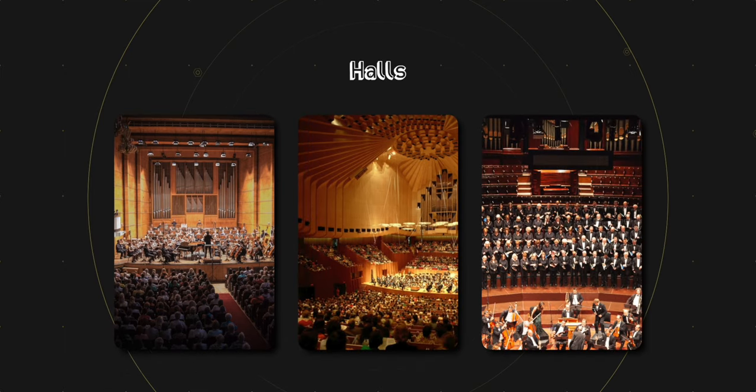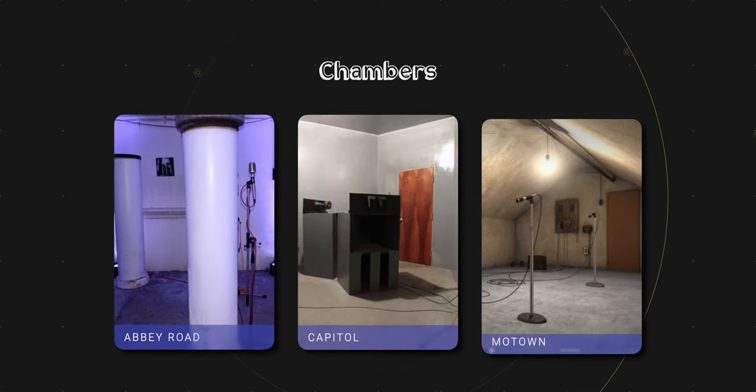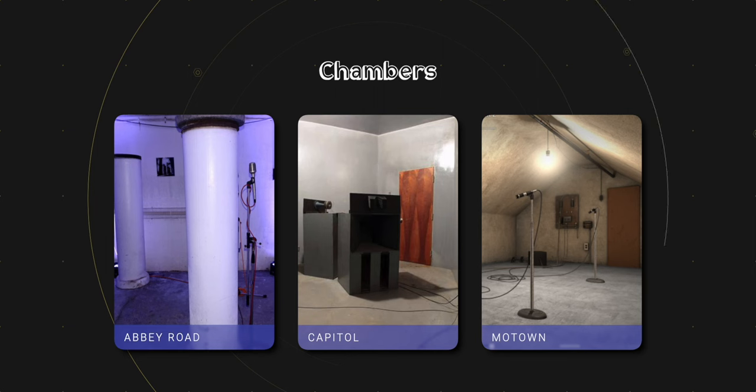Think about where you hear an orchestra — they're in a hall. Longer reverb tail, less early reflections, everything is kind of further away. The walls are over there; things take time to get to your ear. And the last real-space type is the chamber, which is basically just a big reflective room dedicated to creating an ambience where one didn't exist. There are some really famous ones: Capitol Records, Abbey Road, the Motown one — Hitsville USA. And you can get emulations of all of these things, which is kind of cool.